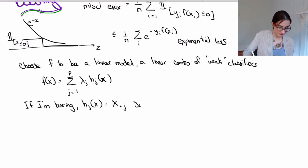So in that case, f of x equals the sum over j equals one to p, lambda j, and then this is x dot j. There we go.